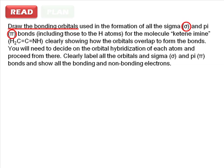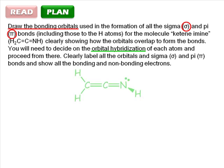Some of the planning part in the question has been done for us. It tells us that we need to decide on the orbital hybridization of each atom and proceed from there. To do that, we'll have to draw a Lewis structure for the molecule and count electron domains on each atom.